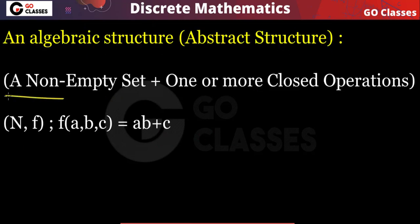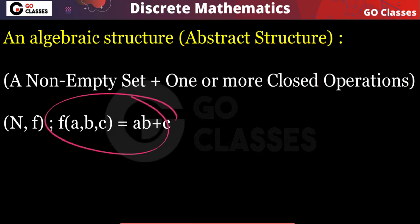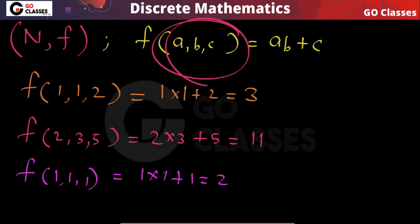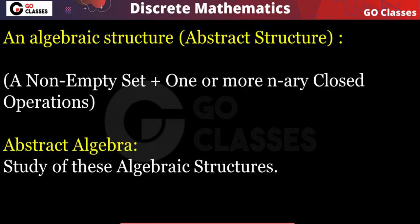So the definition of algebraic structure is: a non-empty set on which we define one or more n-ary closed operations. These operations can be binary, ternary, or any n-ary operation. For example, the operation f that takes three values from the set of natural numbers is a ternary operation. The operations can have any arity.